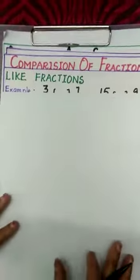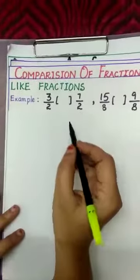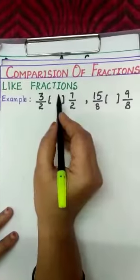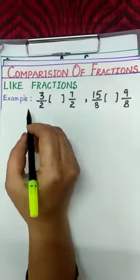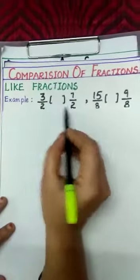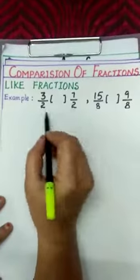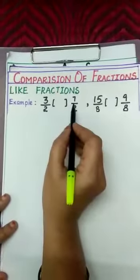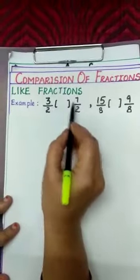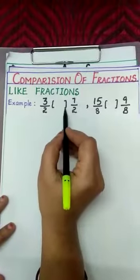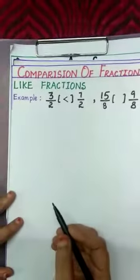First one is comparison of fractions. Let us see like fractions. Fractions having the same denominators are called like fractions. For example, 3/2 and 7/2. As they have the same denominators, we compare the fractions by seeing the numerators. 3 is less than 7, so 3/2 is less than 7/2.